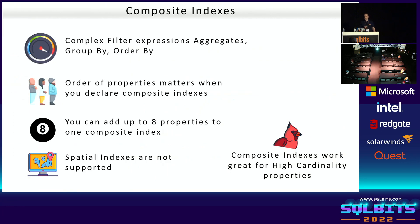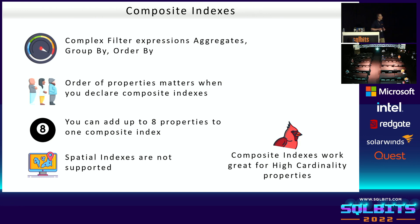Composite indexes are great for complex filters, expressions, aggregations, and ORDER BY. You can combine multiple properties in one index policy. Order matters — if your query uses ascending or descending ORDER BY, your composite index definition must match exactly, otherwise the composite index won't be used. By default you can add up to eight properties; contact Cosmos DB if you need more. If you have geospatial data, you cannot create composite indexes on them. For high-cardinality data, I strongly suggest composite indexes — they can save significant money.